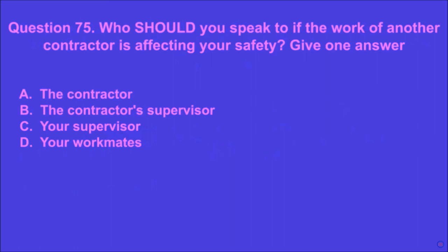Question 75: Who should you speak to if the work of another contractor is affecting your safety? Give one answer. A: the contractor, B: the contractor's supervisor, C: your supervisor, D: your workmates. C is the correct answer.